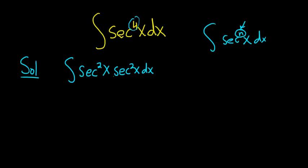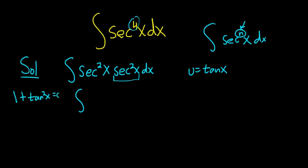So now we're saving a secant squared. u is going to be tangent in this case. You might say, well, where's tangent? What we're going to do is use an identity. If you remember, 1 plus tangent squared equals secant squared. So you replace this secant squared with 1 plus tangent squared.